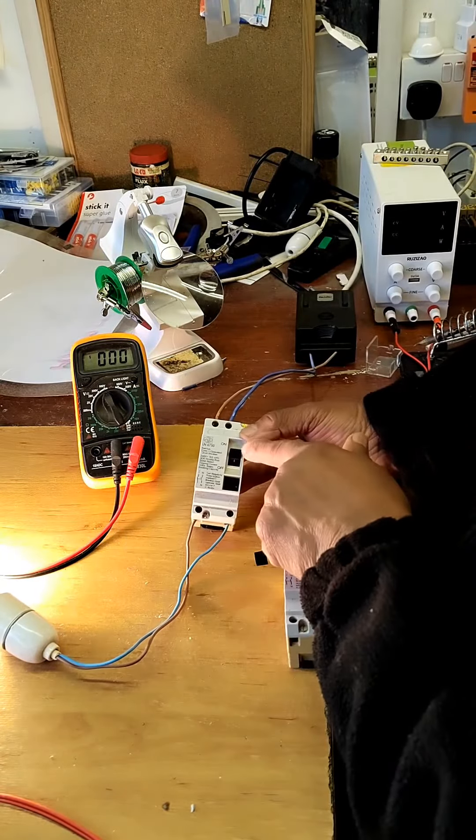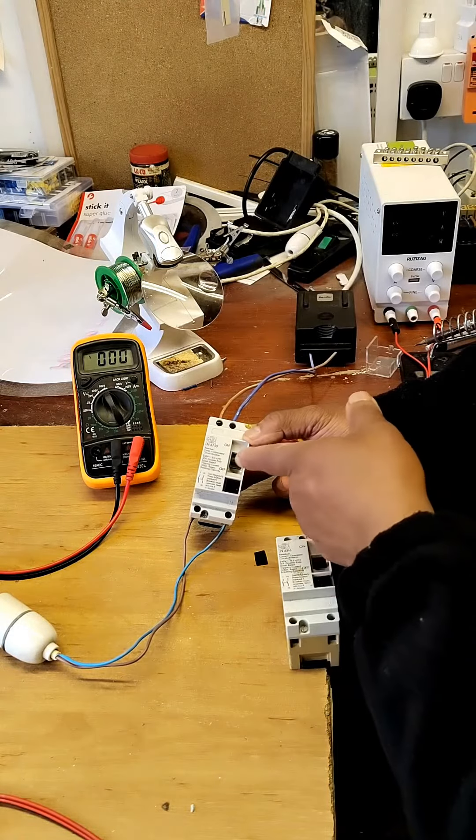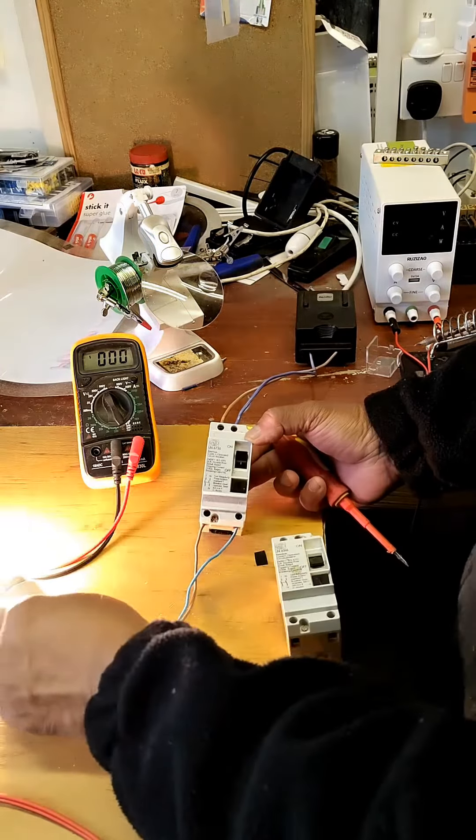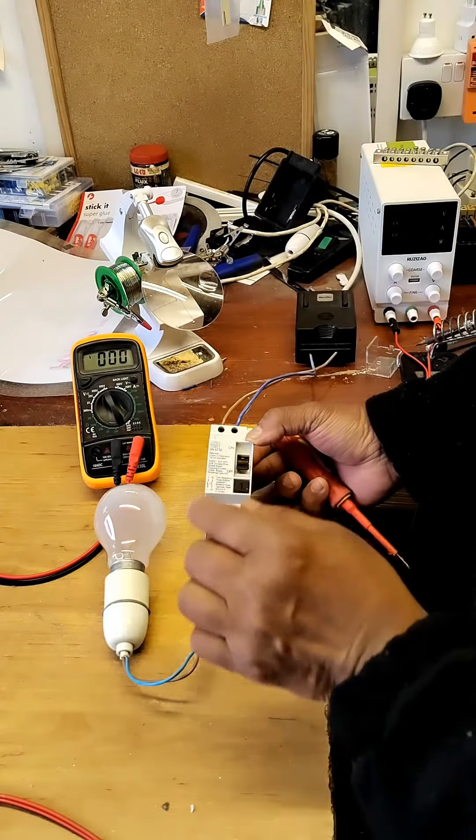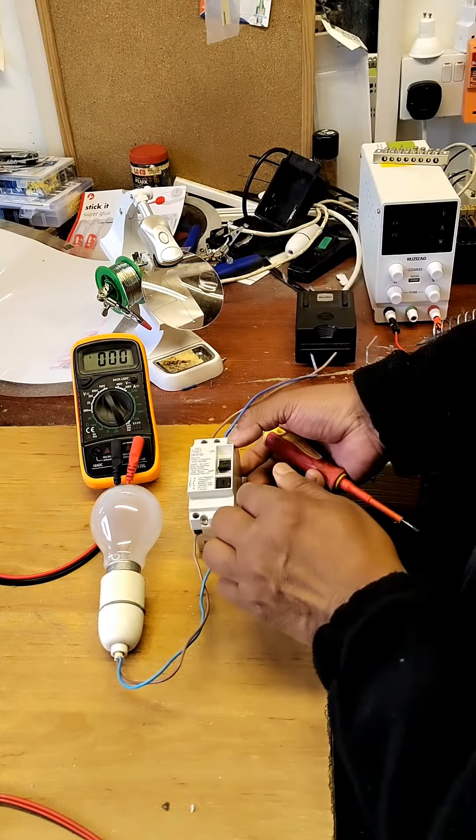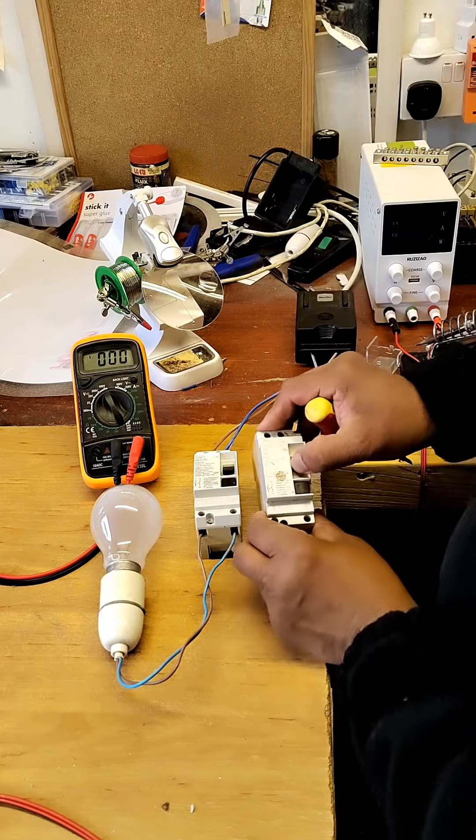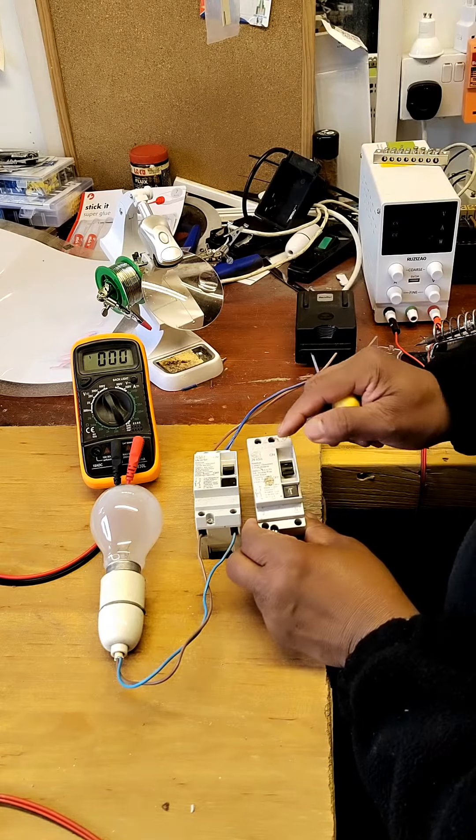So this is what you call a residual current operated circuit breaker. This is what you have normally in houses for the supply for safety.